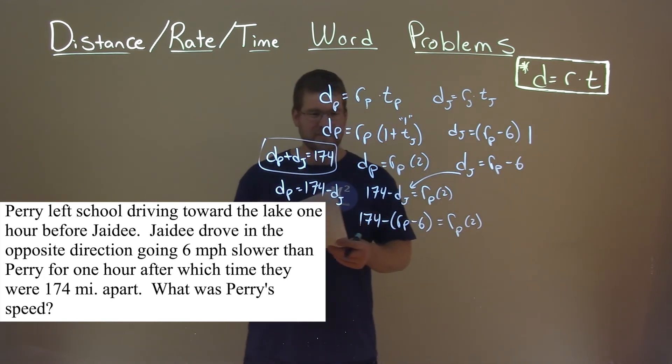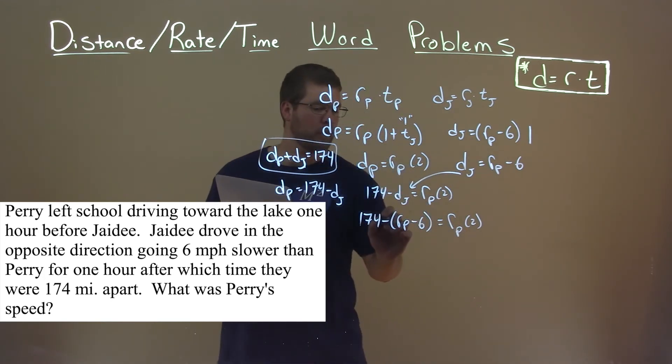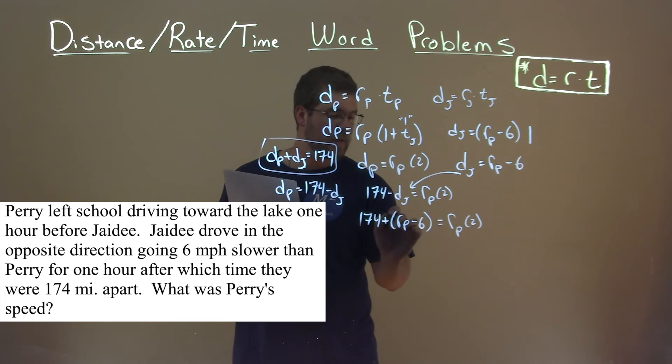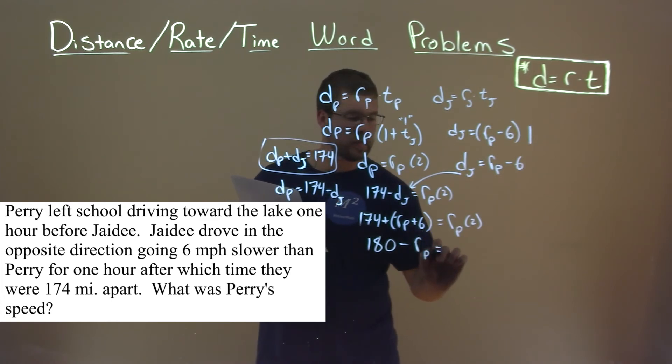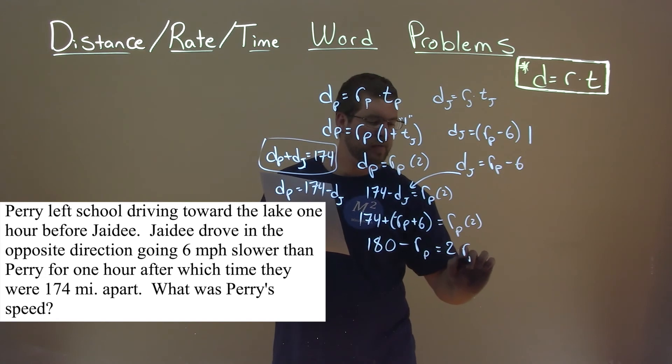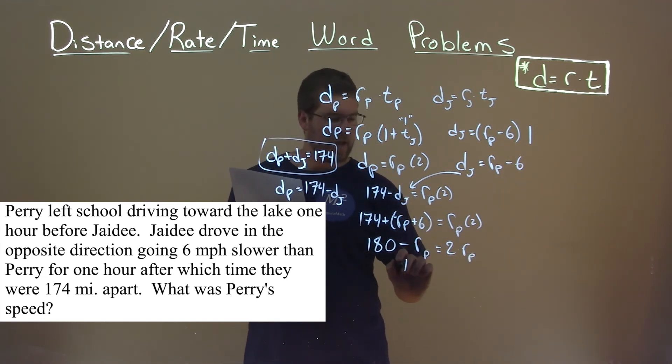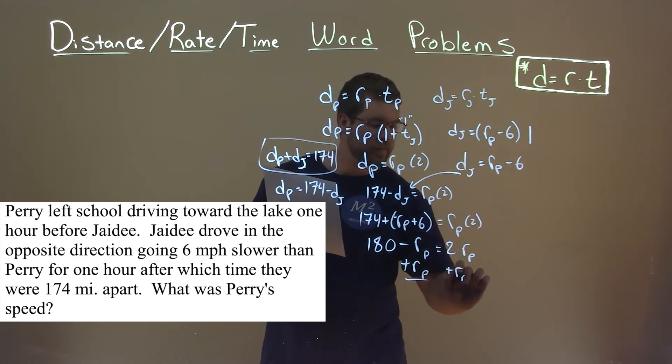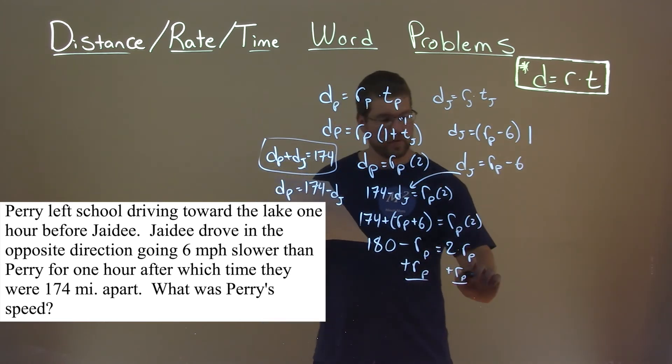So let's rewrite what we can. If we distribute this minus sign, it's plus a negative, and this becomes a positive. 174 plus 6 is 180. And we have a minus R sub P is equal to, we can rewrite that to have 2 comes first, makes it easier to see, times R of P. If we add an R sub P to both sides, what are we left with?